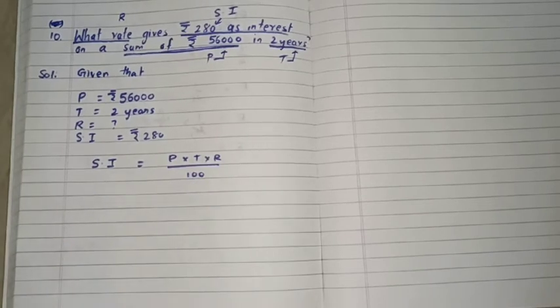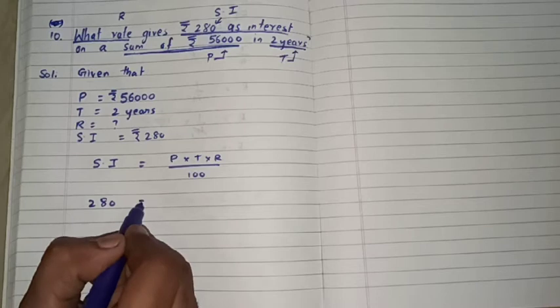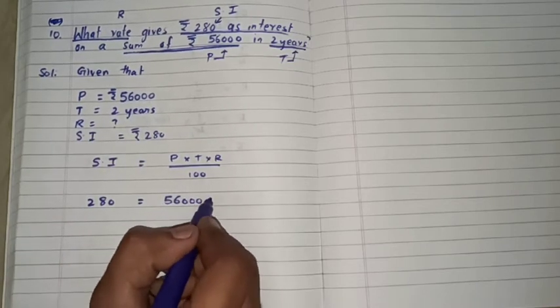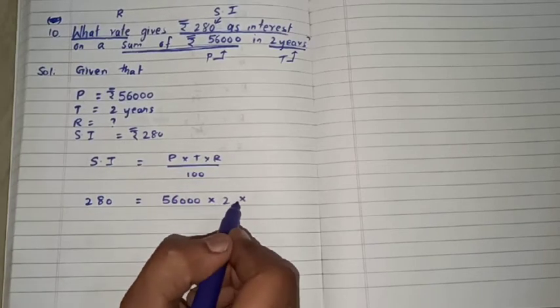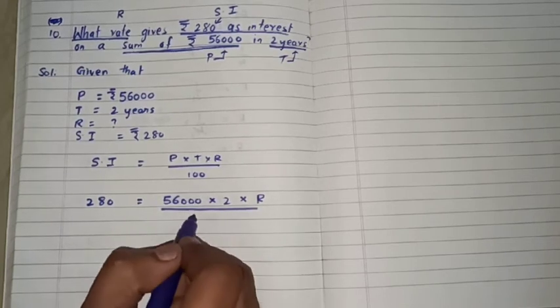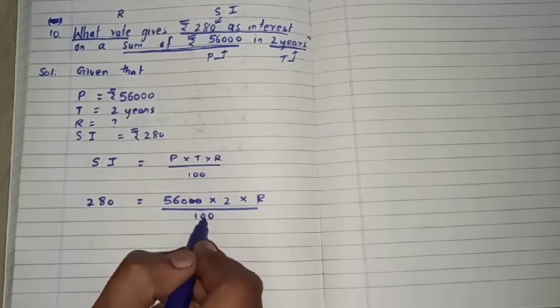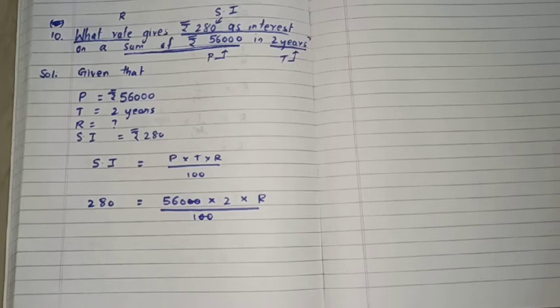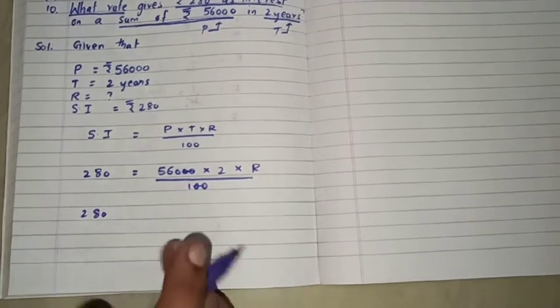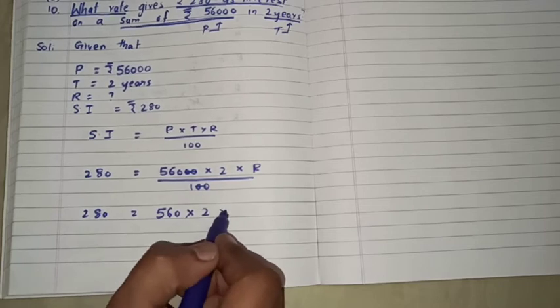Abhi ham simple interest ka jaga par values substitute karenghe. Simple interest ha rupees 280 toh simple interest ka jaga 280 ho gaya. P ki jaga par 56,000, toh 56,000 into T yane 2 into R, yane sirf R, divided by 100. Abh dhek lije kya ho gaga, ya haan per ye dho zeros aur ye dho zeros cancel ho gayenge. Kya bache gaga? 280 is equal to 560 into 2 into R.